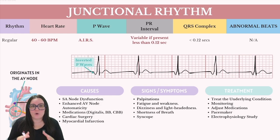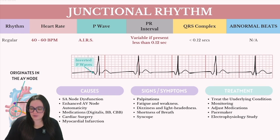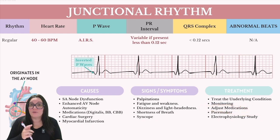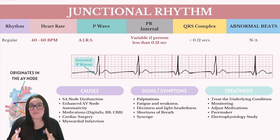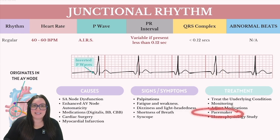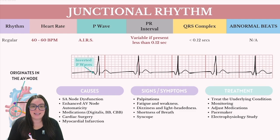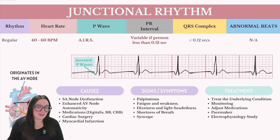Treatment for junctional rhythms is always going to focus on addressing the underlying condition that's causing it. We also want to make sure that we're monitoring these patients — asymptomatic patients or those with benign causes might only require minimal observation. We may also want to adjust medications based on what's contributing to the arrhythmia. In more severe symptomatic bradycardia cases, pacemakers may be needed to help maintain adequate heart rate. And in more complex cases, electrophysiology studies may take place to evaluate the heart's electrical system for more targeted treatment.